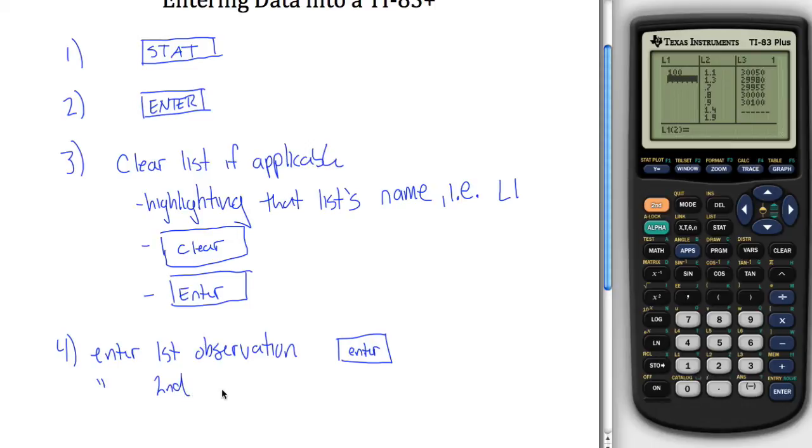And then continue in that fashion. Enter your second observation and then hit enter, etc. So maybe my next observation is the number 200. My next observation is 150. My next observation is 350. You can continue putting observations in. Maybe there's a 400, a 110, a 310, a 755, maybe a 900, good enough.